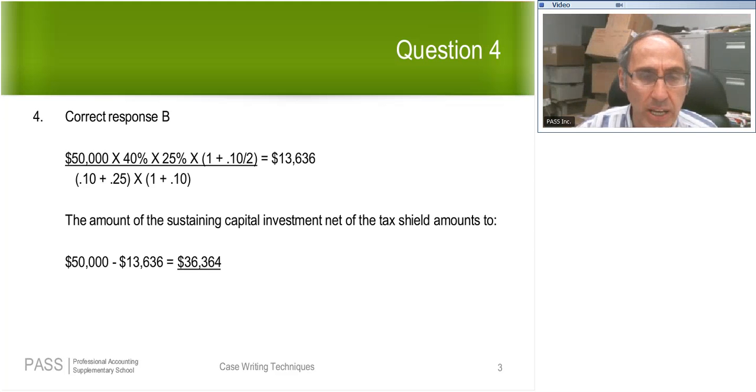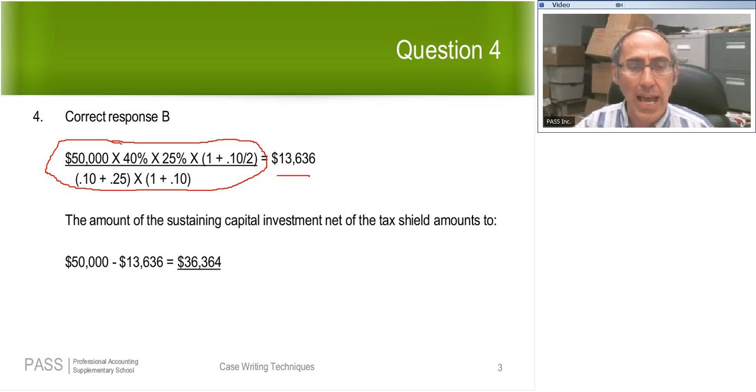So my capital reinvestment before considering taxes, before considering the tax shield, is 50,000, not 90,000. The next step is to calculate the tax shield. Here I'm just simply inserting into the formula that they're going to give me on the exam, the same formula I gave you on page three of your finance note. I'm simply inserting the 50K, the tax rate, the discount rate, the CCA rate, and I get my tax shield of 13,636. The amount of my sustaining capital reinvestment net of the tax shield is my 50K I need to spend each year to maintain my operations minus my tax shield that we just calculated right here, and I end up with 36,364.